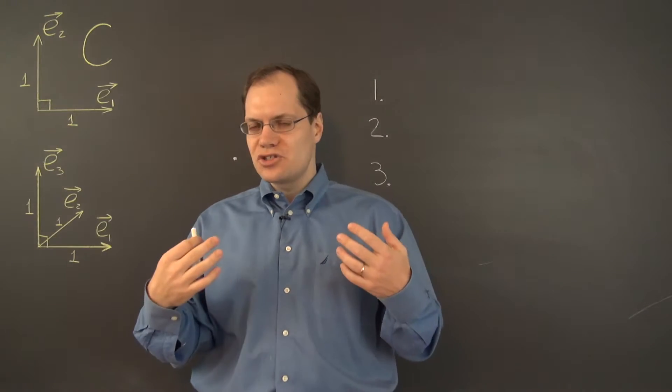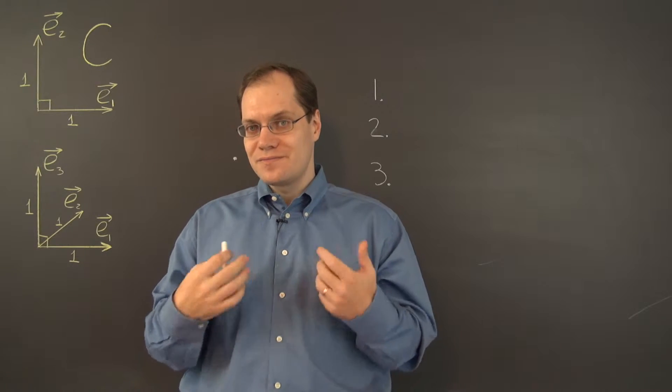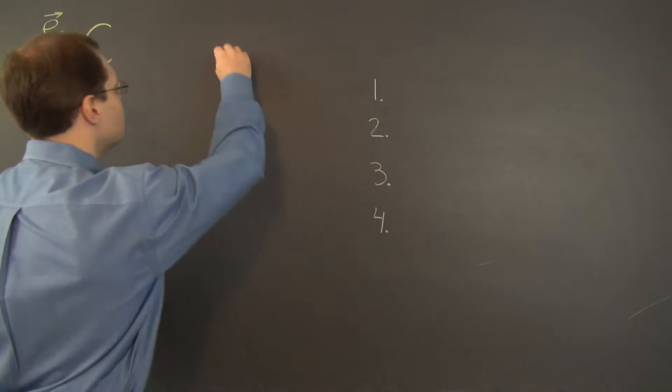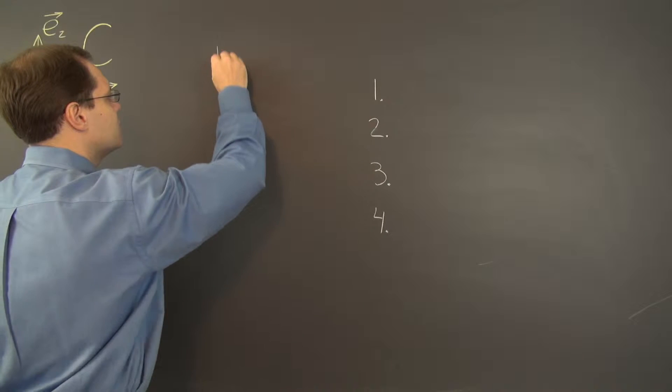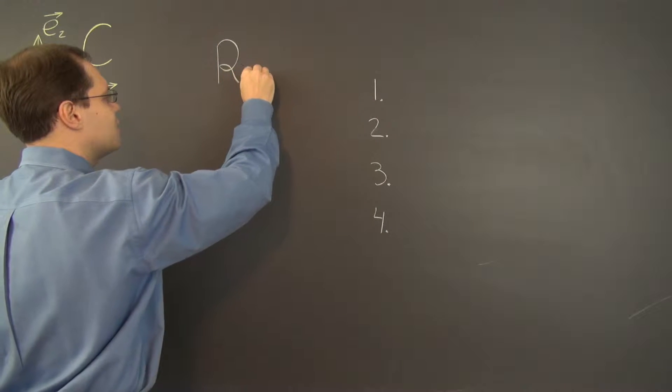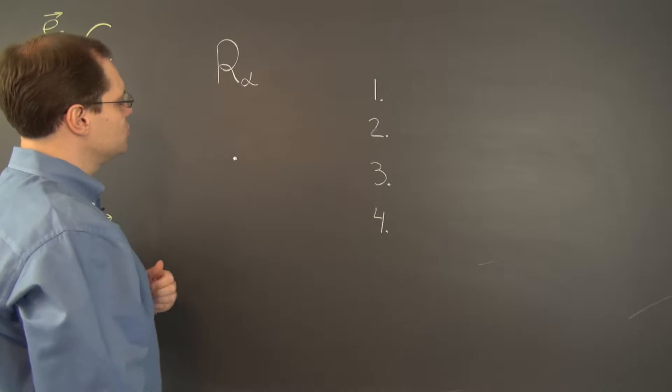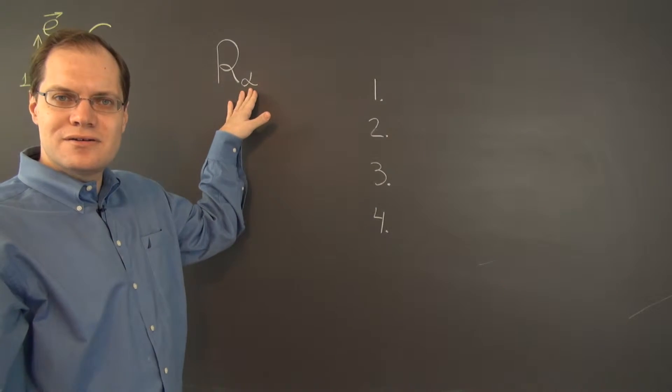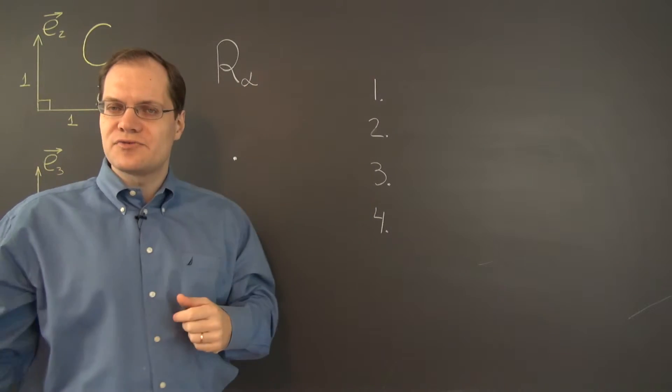And because rotations are one parameter family of transformations, you can denote them like this: R sub alpha, where alpha is the angle by which you're rotating. And so here's the single parameter that defines the whole transformation.